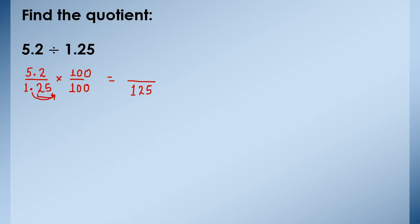Now in the numerator only one place is there after decimal. But we have to shift this decimal two places to the right side. So what we will do? We will add one zero at the right of 2 and then shift this decimal two places to the right side. So it will be 520. Now we have to divide 520 by 125.